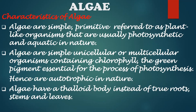Algae have a thalloid body instead of true roots, stems and leaves. A thalloid body is a plant body that is not differentiated into stem, roots, leaves etc. and lacks true roots and a vascular system. This type of thallus is typically found in algae, fungi, lichens and liverworts.